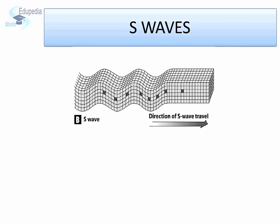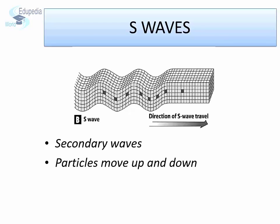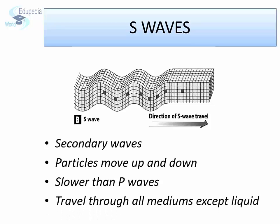S waves, or secondary waves: in secondary waves, particles vibrate up and down perpendicular to the direction of wave propagation, causing a series of crests and troughs. S waves cause the ground to move up and down and hence are more destructive, but they are slower to arrive at a seismic recording station compared to P waves. They are also called shear waves, and they can travel through all mediums except liquids.